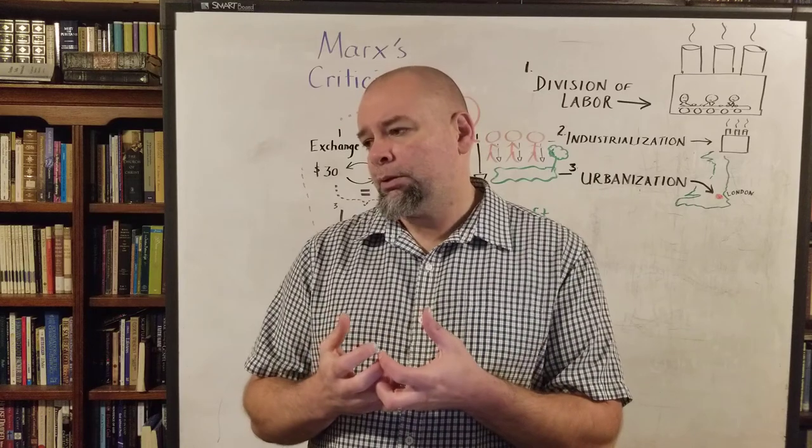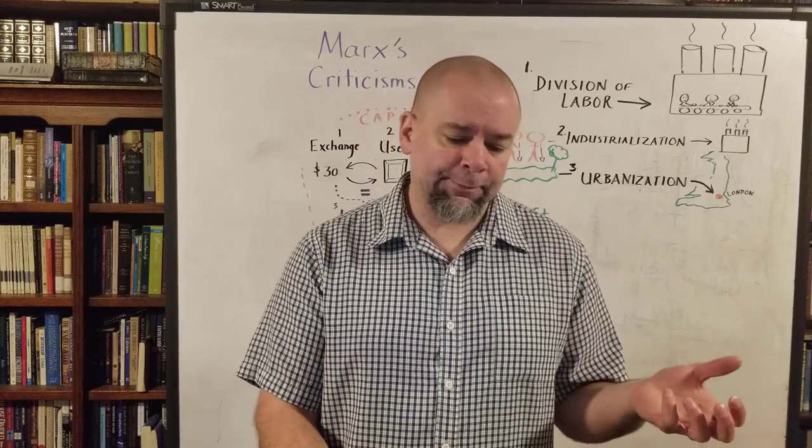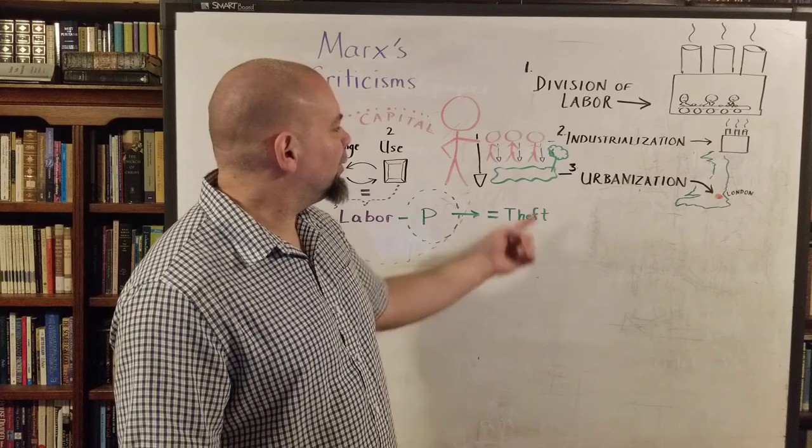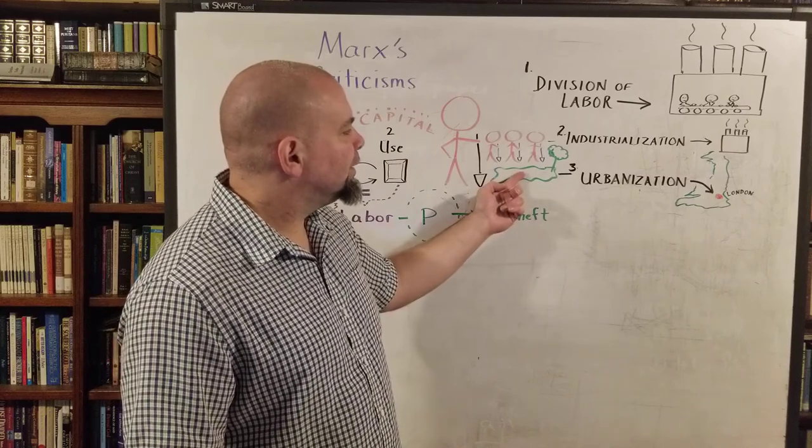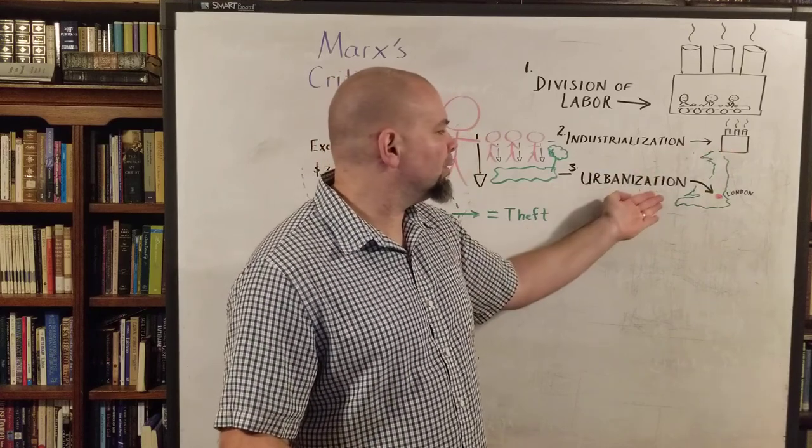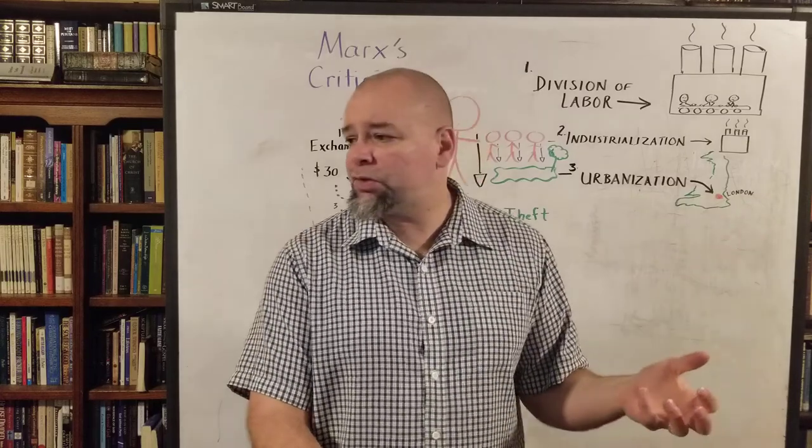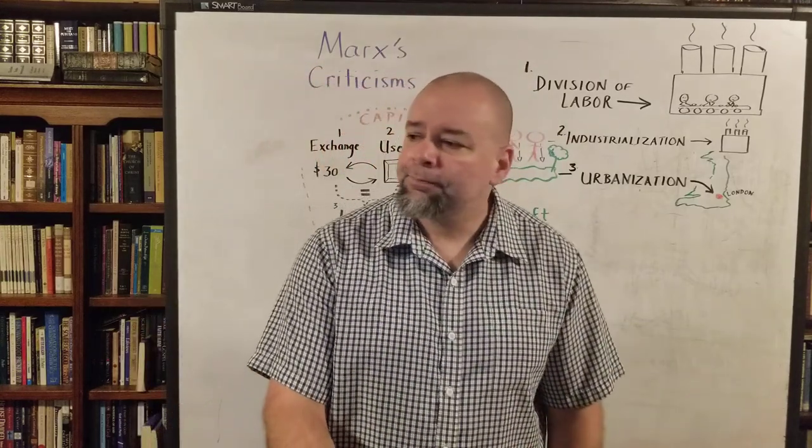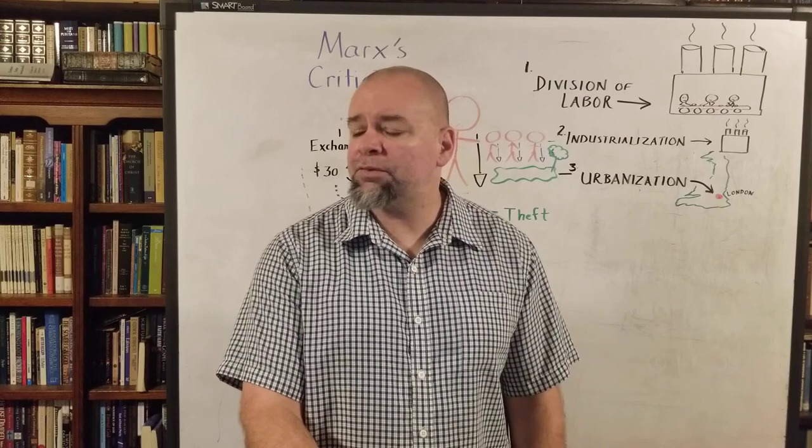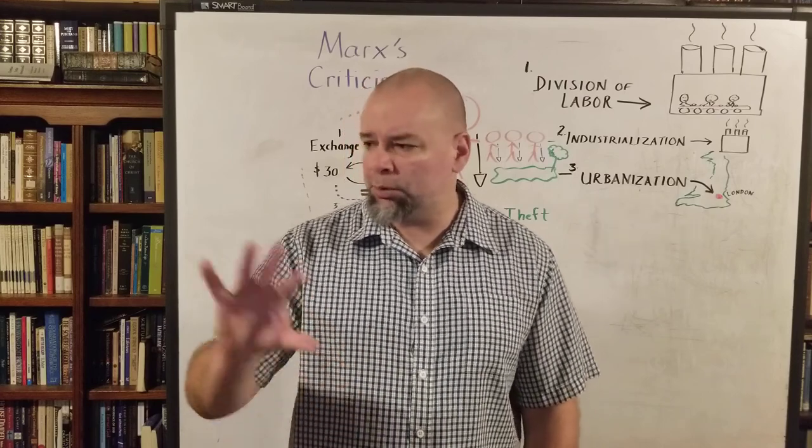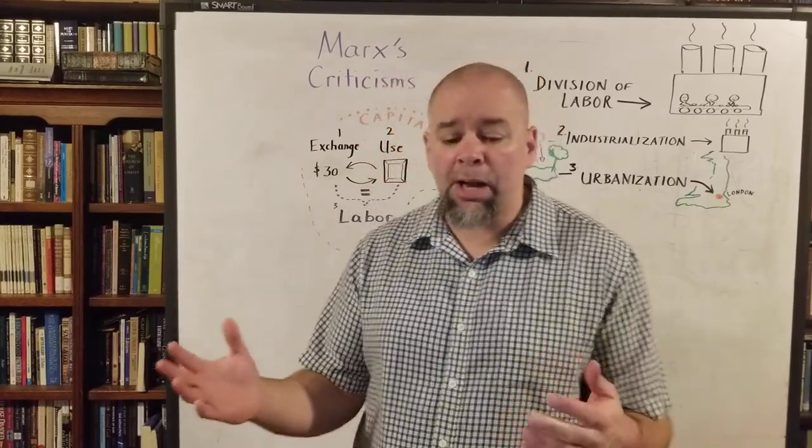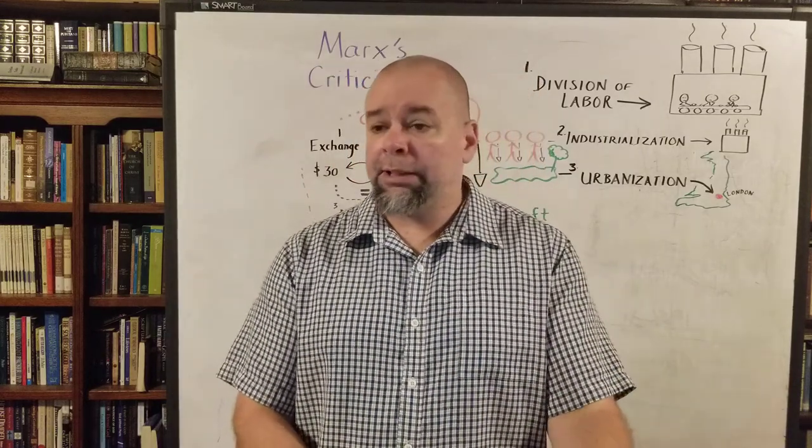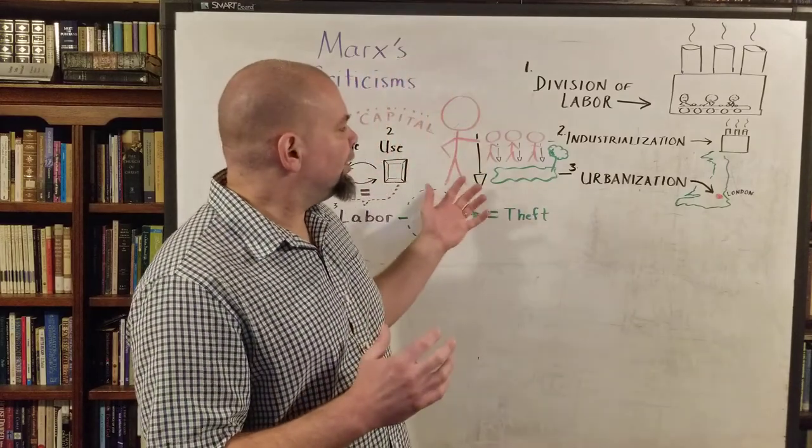You also have industrialization represented by the factory in miniature there, where you lose this in favor of this. And then with that also urbanization, where man is displaced. He has to go to the city center to be a part of that product. So urbanization is the displacer of property. This will lead us to Marx's first of many criticisms of different social spheres.